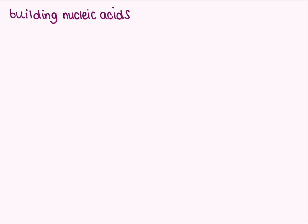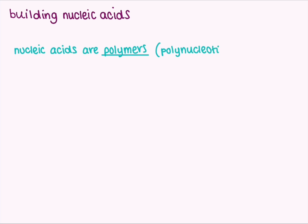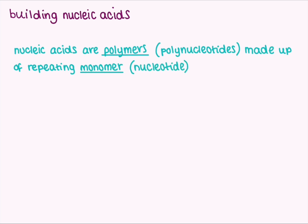Nucleic acids — DNA and RNA — are no different from any of the other polymers in that they are long-chain molecules made up of smaller repeating units called monomers. In the case of nucleic acids, the specific monomer unit is called a nucleotide. DNA and RNA both have the same general nucleotide structure, similar to how proteins have the general amino acid structure, though there are some slight differences which we'll look at further on.